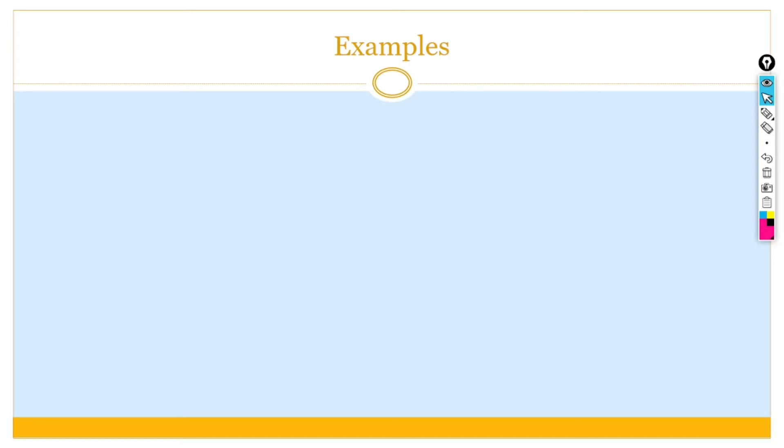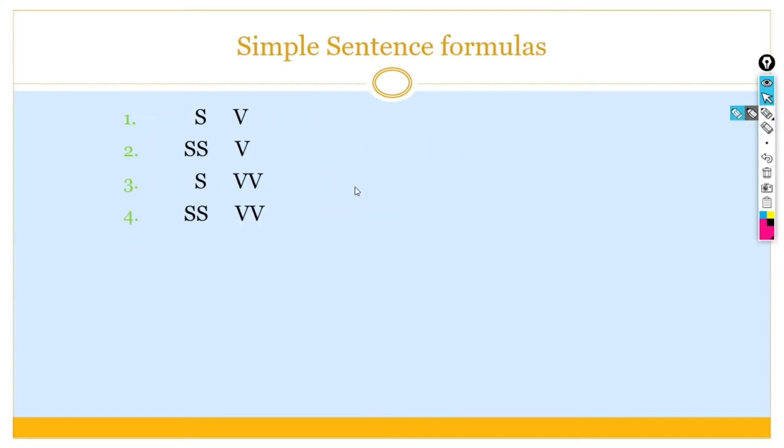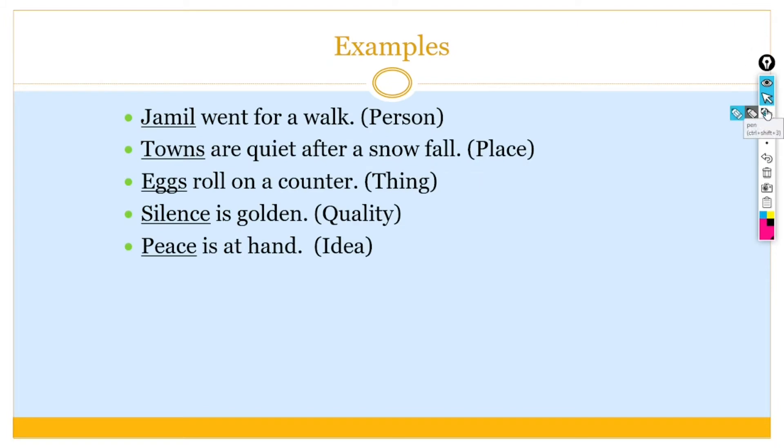Now, I would like to share a few examples of simple sentence. The first example is that, Jamil went for a walk. So, here, Jamil is a person.